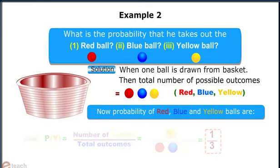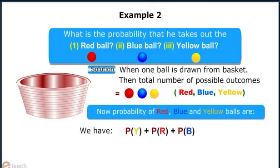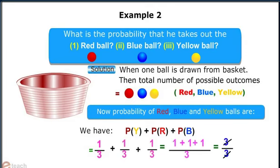Therefore, adding all the three probabilities, that is P(Yellow) + P(Red) + P(Blue), we get the total as 1/3 + 1/3 + 1/3 which is equal to 3/3 and it is equal to 1.